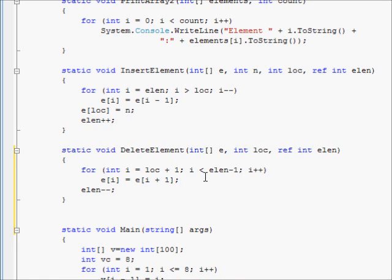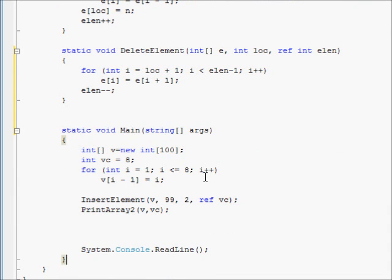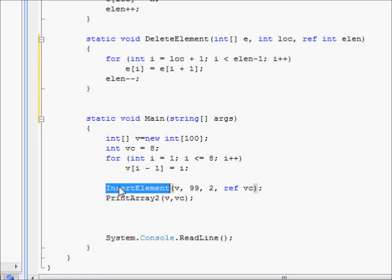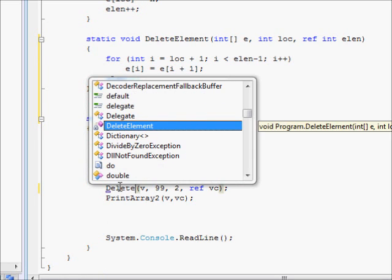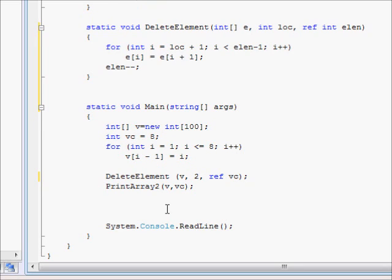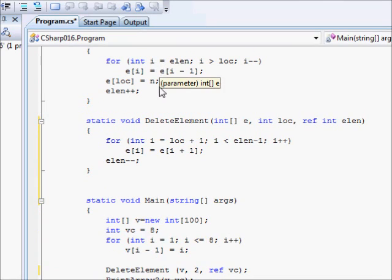Now one last thing to do is elen minus minus. Okay, so we are having the same example. We are filling the values from zero to eight. Now we are going to say DeleteElement, and here we are deleting the second element. Now we are not deleting number two, we are deleting the element at index two. This is what it means. So let us try this out and see how things go.